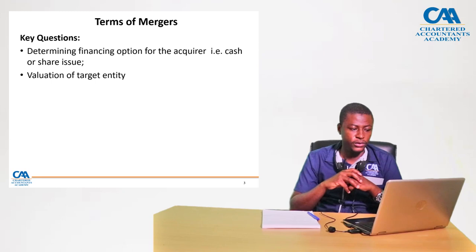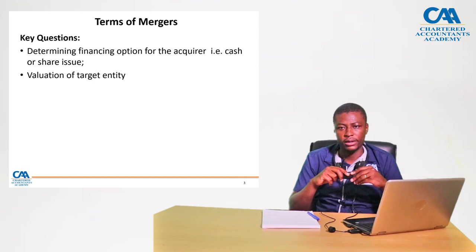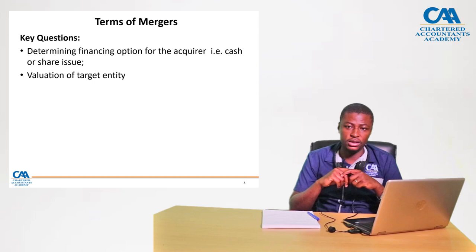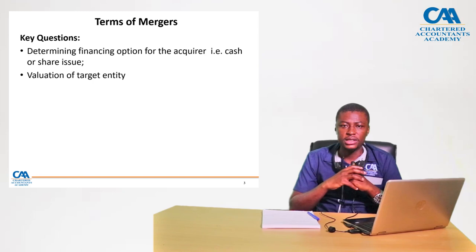The first key question is around determining the financing option for the acquisition. Are we going to finance the merger via cash, or are we going to issue shares in our own company to finance the acquisition? The second question is: we have decided to acquire the target company — how much should we pay for the equity in the target company? This brings us to the valuation of the target entity.